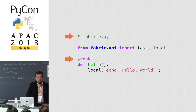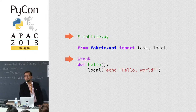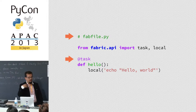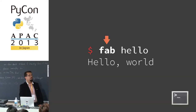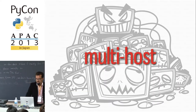To run tasks, we use the fab command. It looks for a fabfile.py in the current directory or in parent directories and runs the specified task — for example, hello. Very simple.